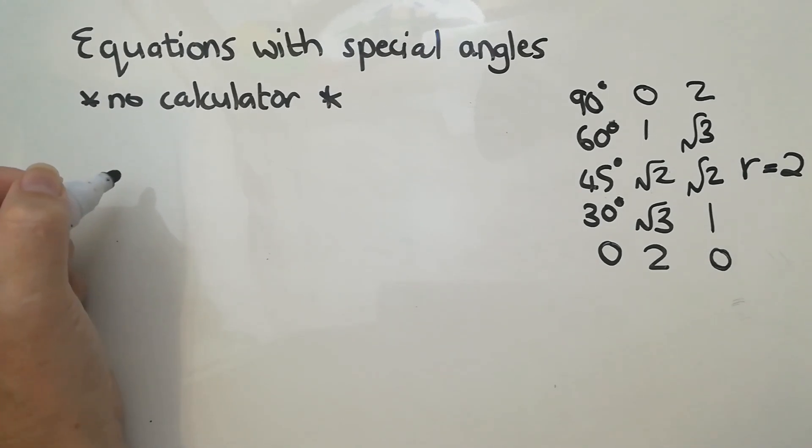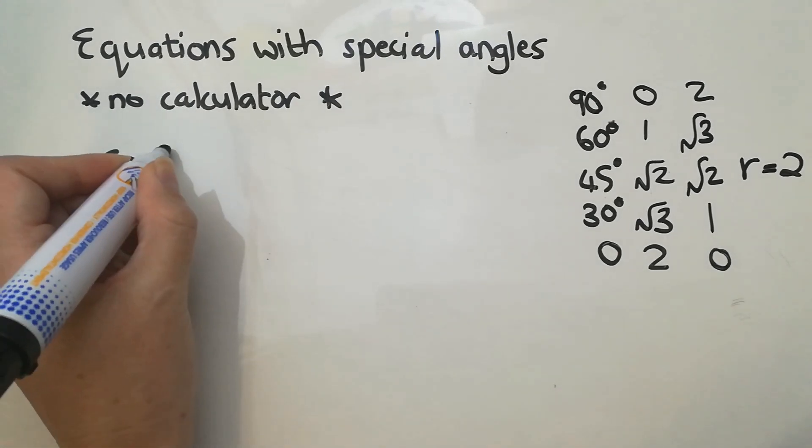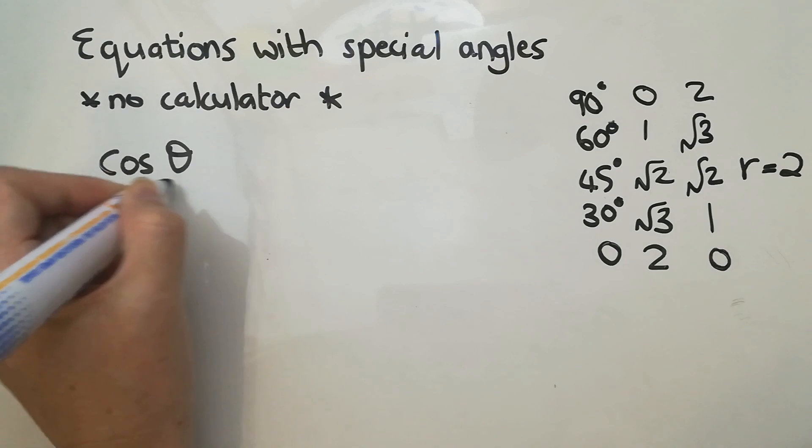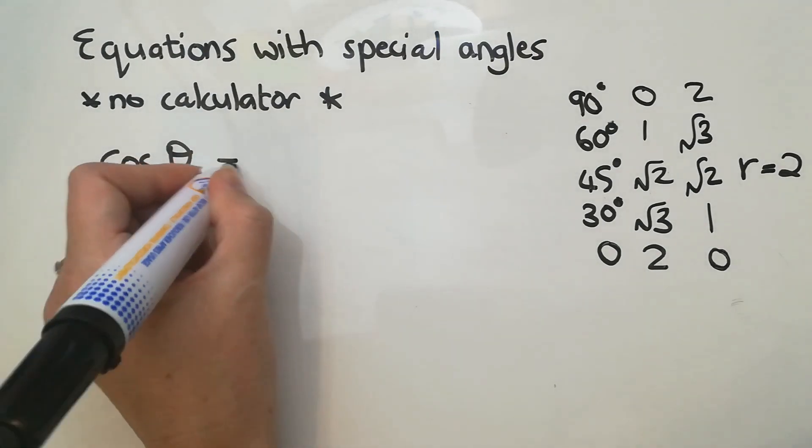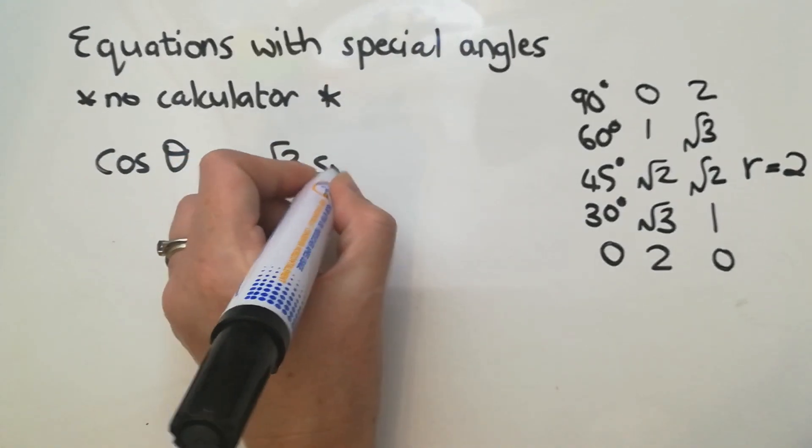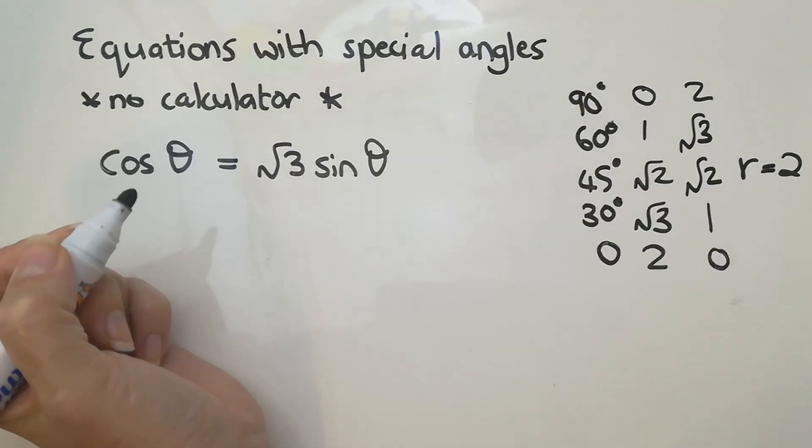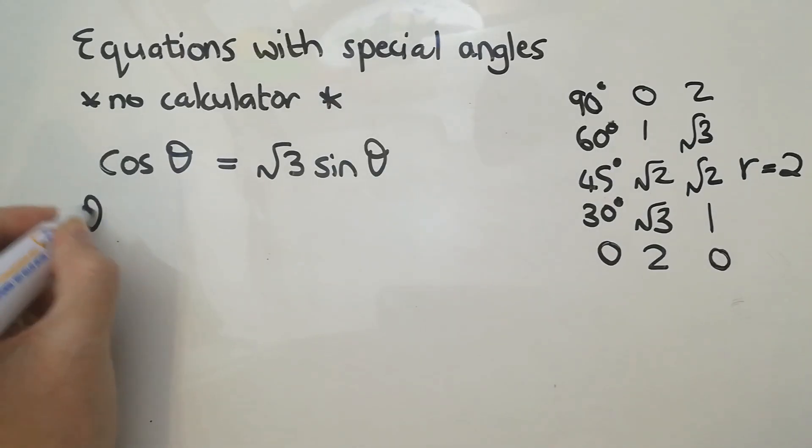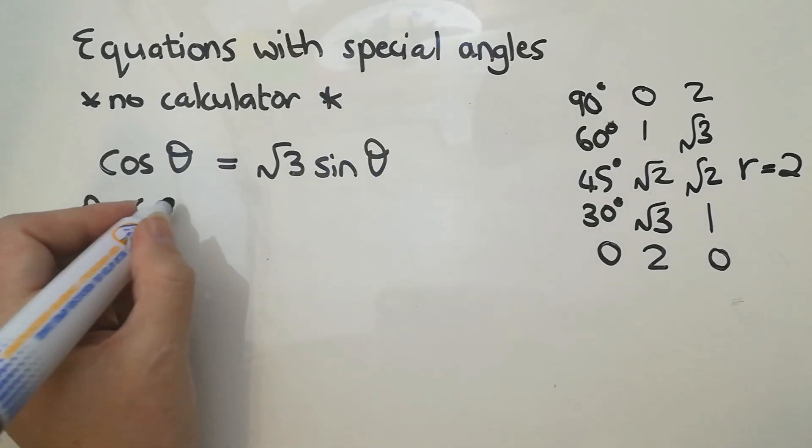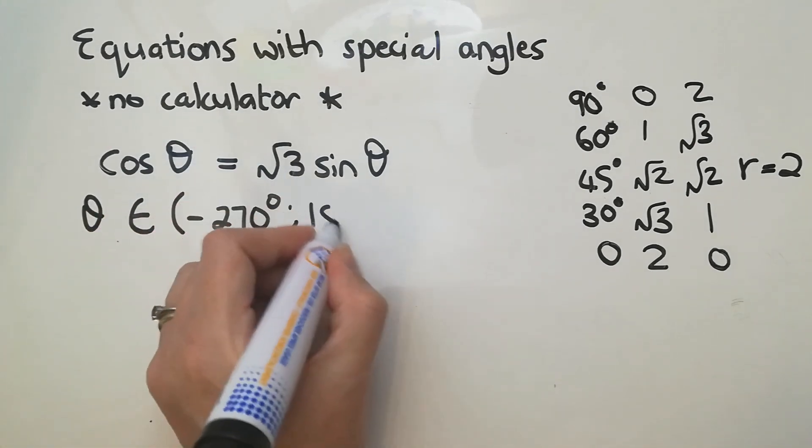Okay, so let's take an example. Let's say that cos of an angle, now that's your unknown, equals root 3 sin of an angle. And you need to solve for theta. And let's say they tell you that theta is an element from negative 270 all the way up to 180.